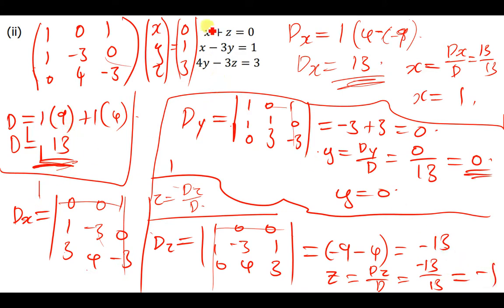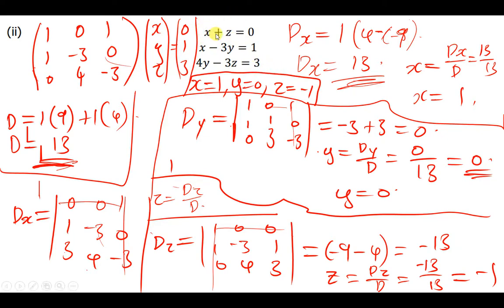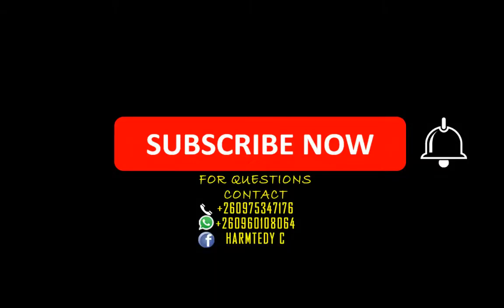So the values of x, y, and z are: x equals 1, y equals 0, and z equals negative 1. These are the answers required. You can substitute them back to verify. Thank you very much for watching today's tutorial. My name is Hamtet. If you have any questions, feel free to ask on any of the contacts on screen. See you in the next tutorial — don't forget to subscribe!